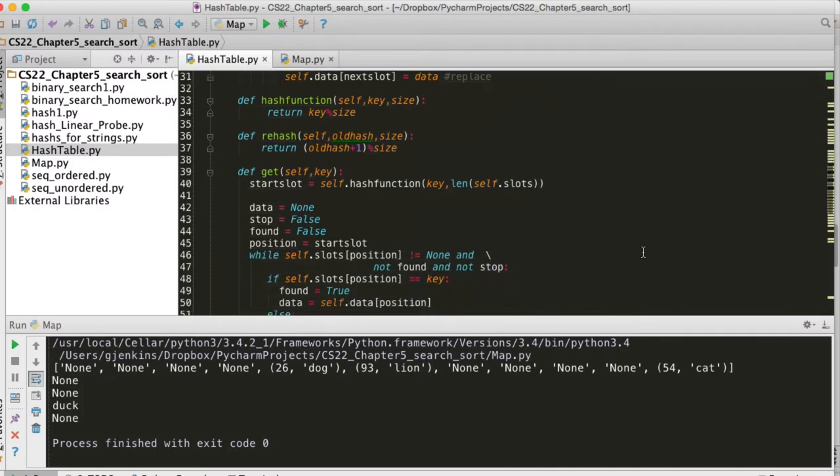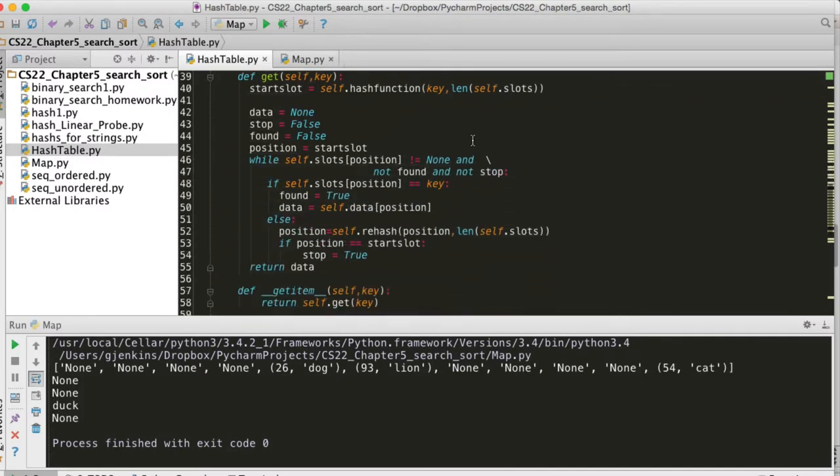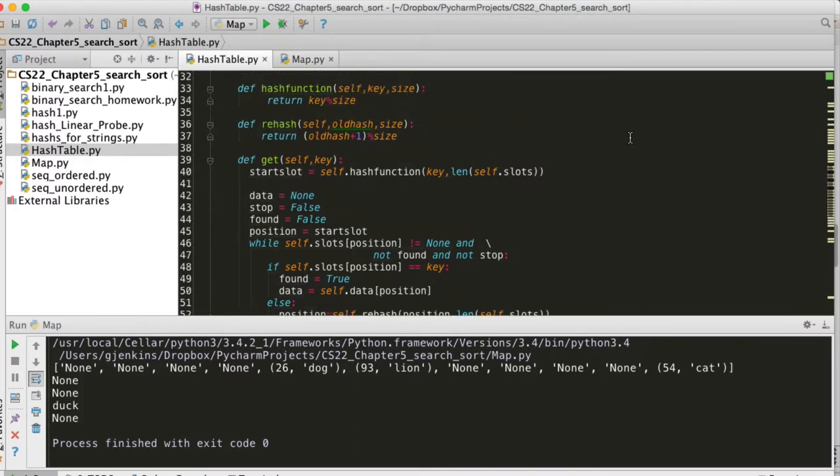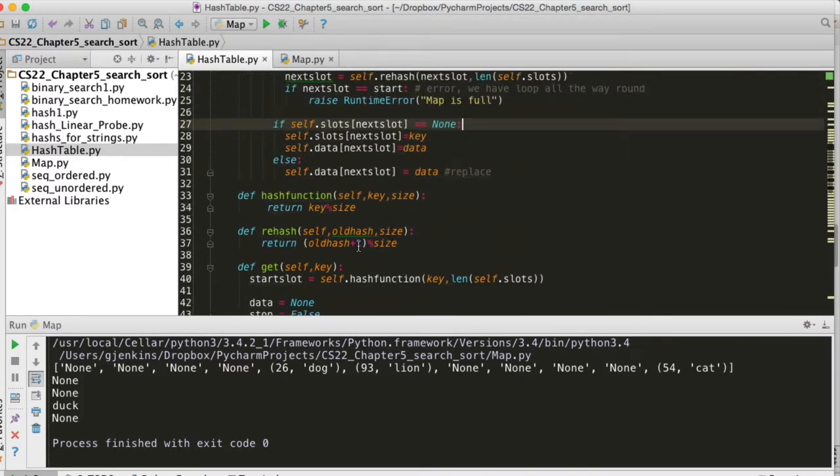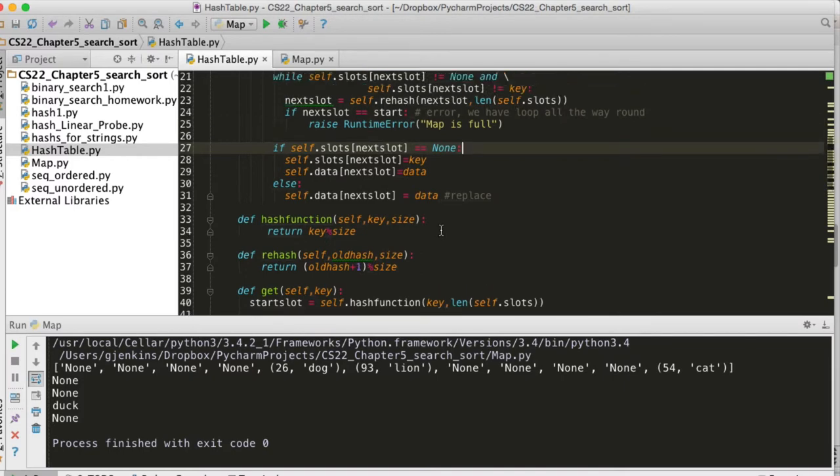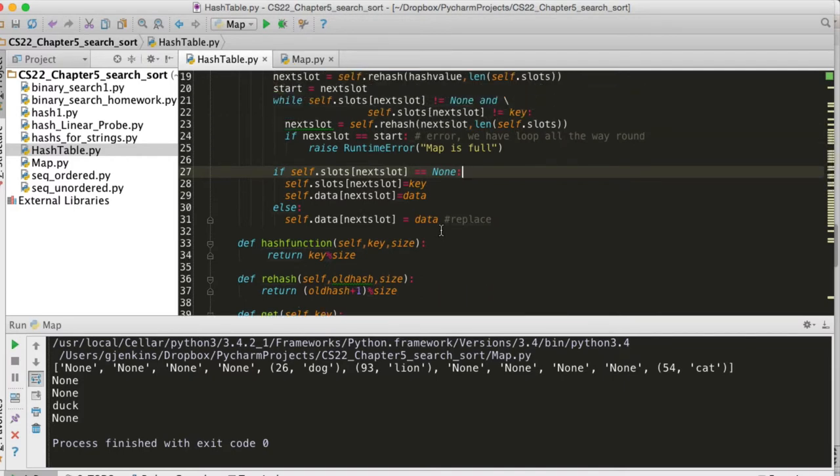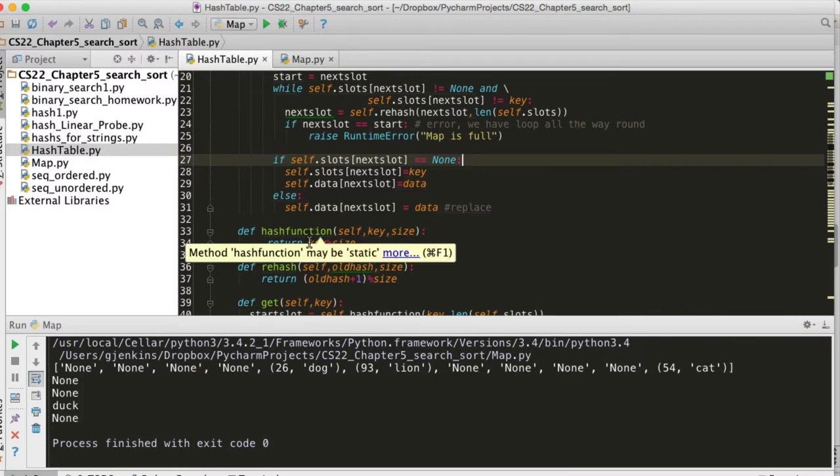When you look at get, it has to do basically the same rehashing until it finds it. And then you'll see here's our rehash function, it's just adding one. So we have the most simple rehash function.